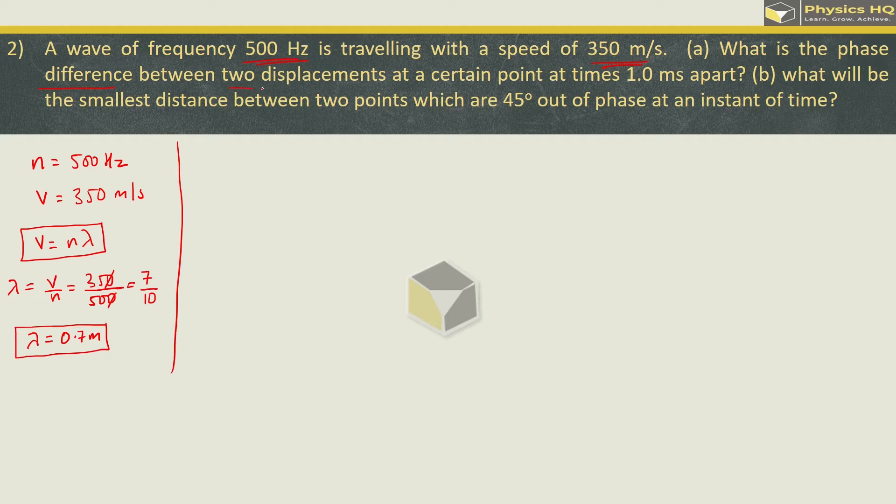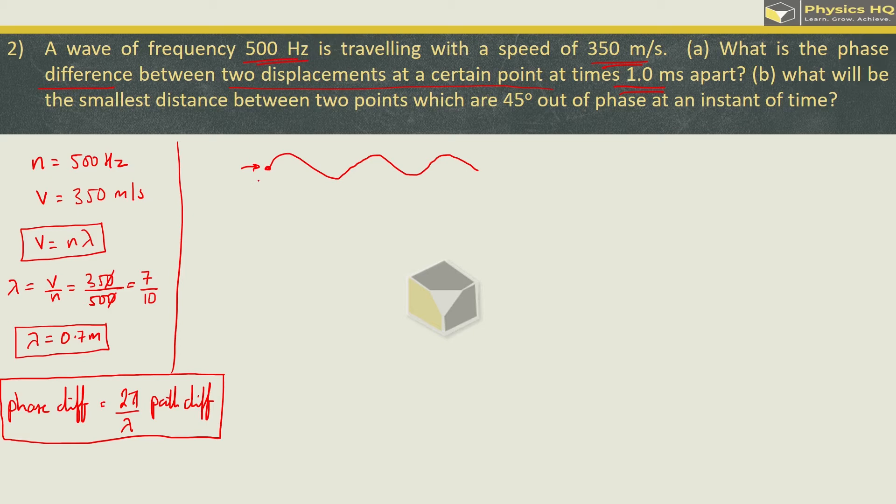So what is the phase difference between two displacements at a certain point at time 1 millisecond apart? Before understanding this question, there's another formula to remember. Phase difference is given by 2 pi by lambda into path difference. So we are supposed to find out the phase difference over here between two displacements and the time taken for that is 1 millisecond. This means if there is a wave which is traveling, let us say you picked up a point anywhere on this. Let us say the first point is where we observe the displacement. Now after time 1 millisecond, we will again check where the displacement is. Let us say we found the displacement somewhere over here. Then in that case we will be finding out what is the phase difference between these two points.